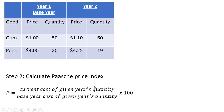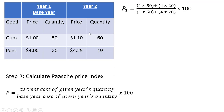The Paasche Price Index is the current cost of the given year's quantity. So in year one, the given year's quantity is 50 and 20. And the current cost of that is going to be $1 times 50 plus $4 times 20. And now for the base year cost — the base year prices are $1 and $4 for gum and pens respectively. So $1 times 50 plus $4 times 20, the same calculation in the denominator.